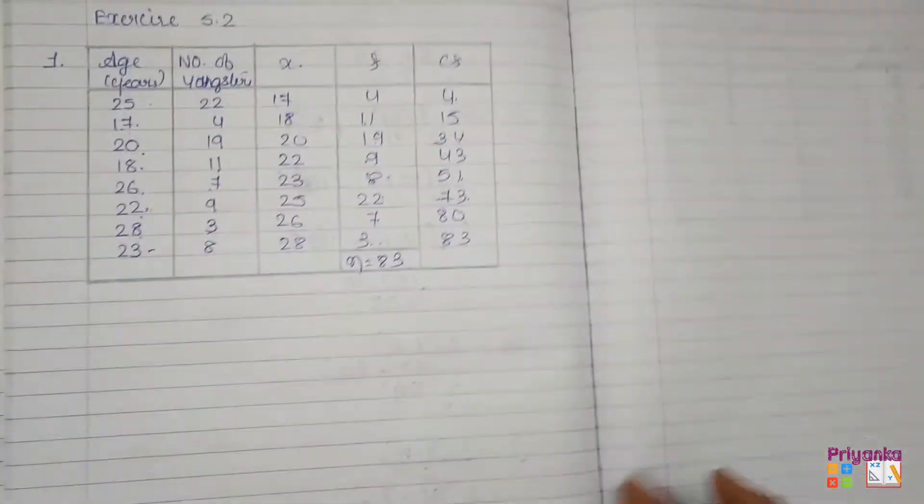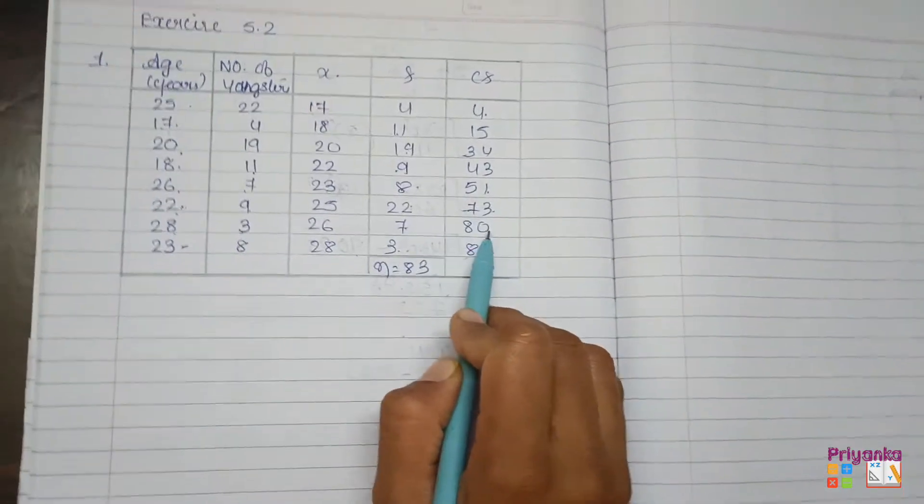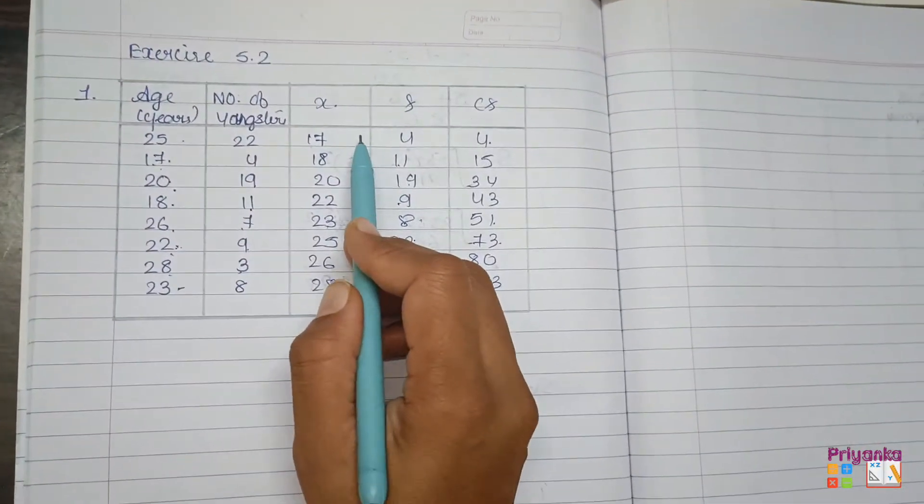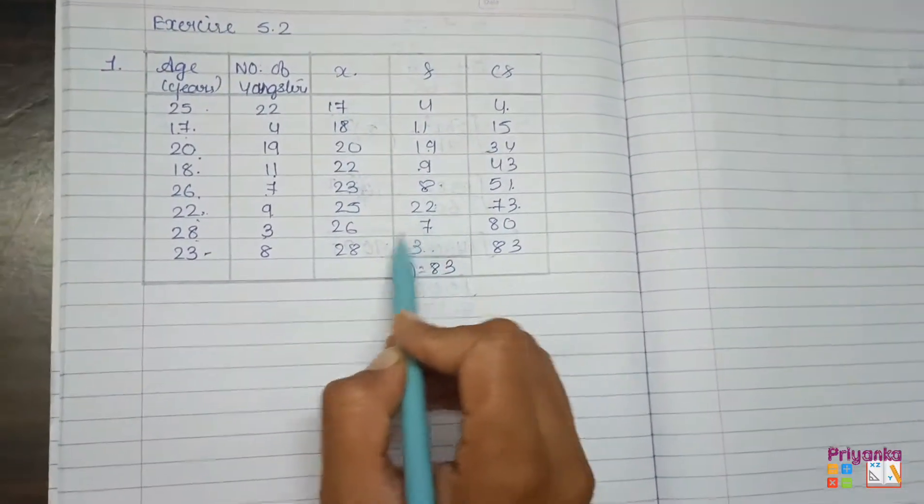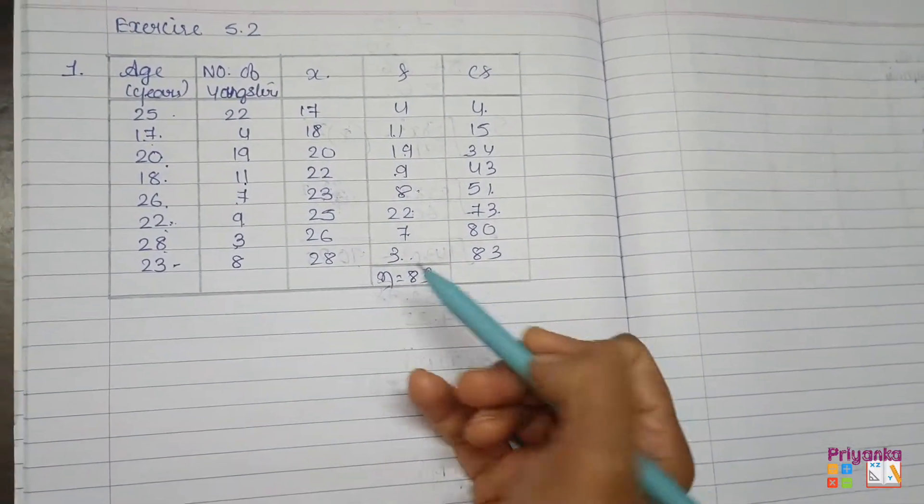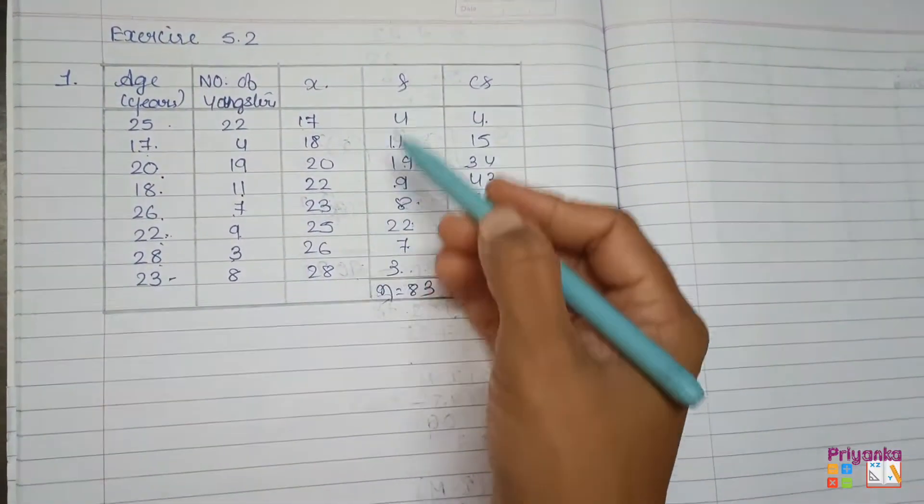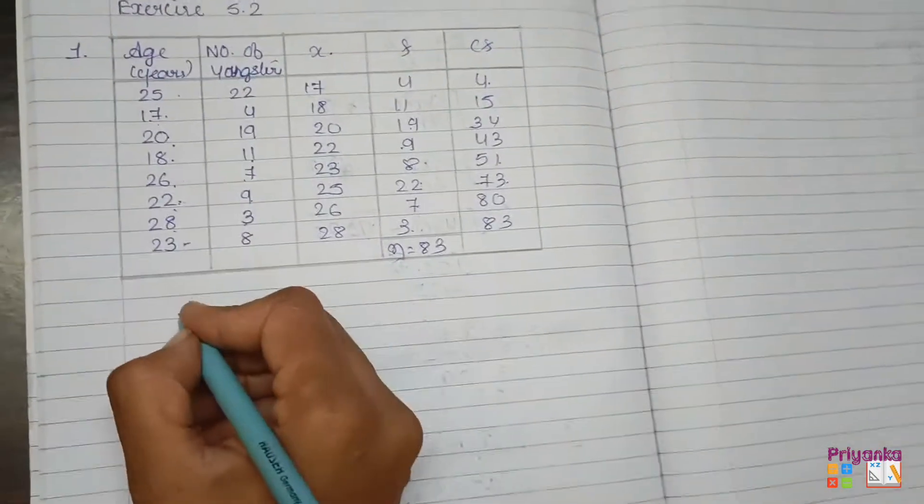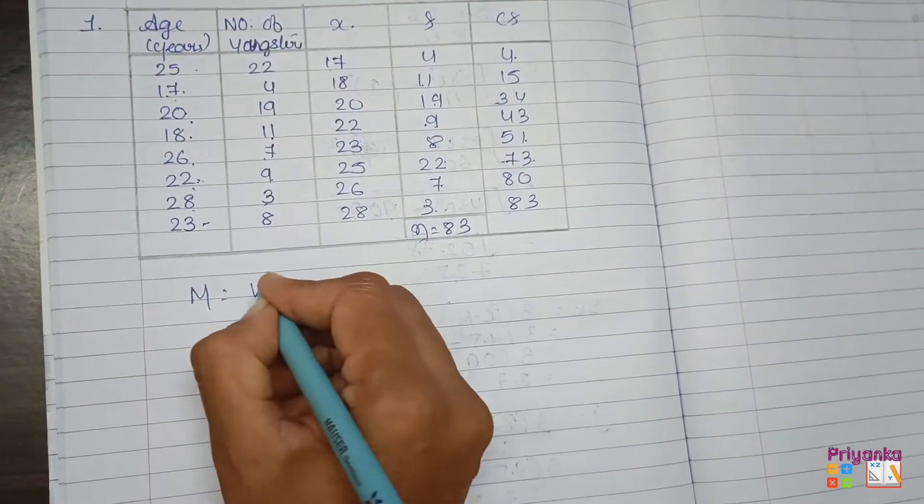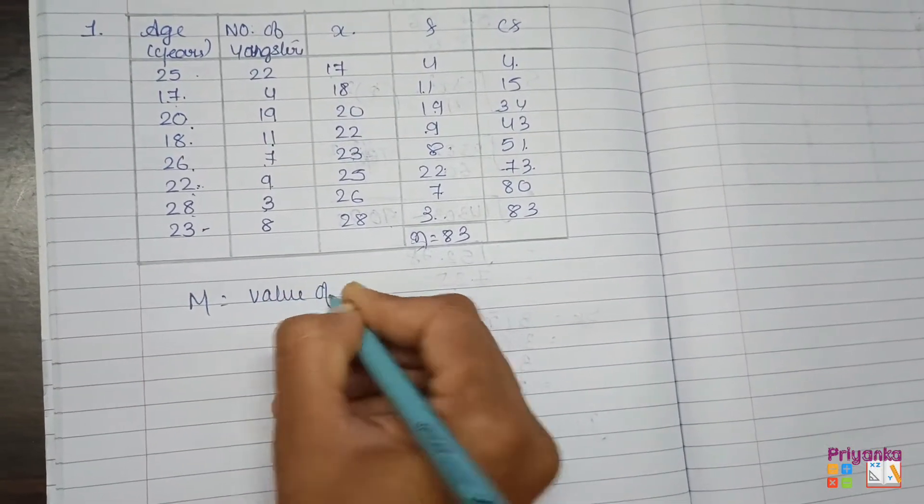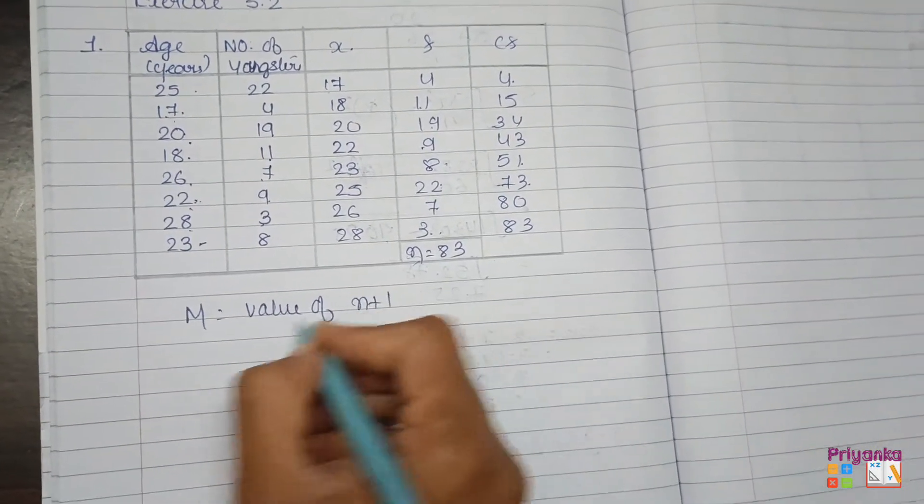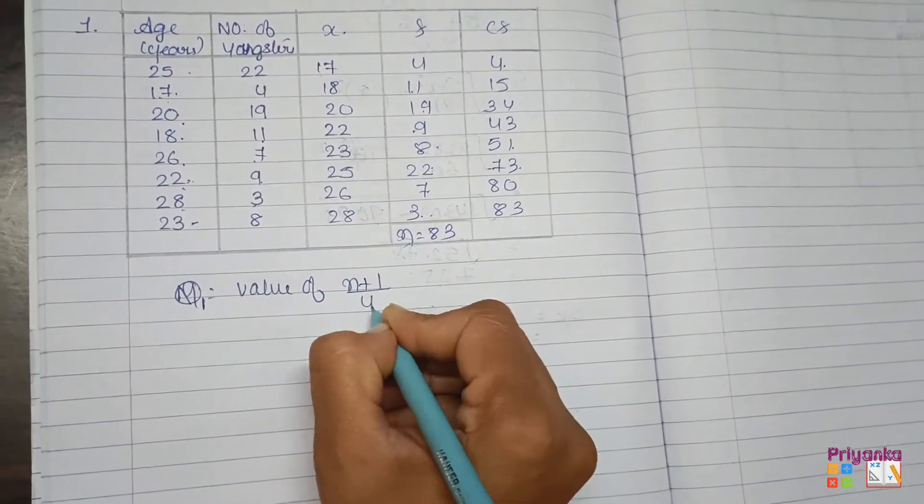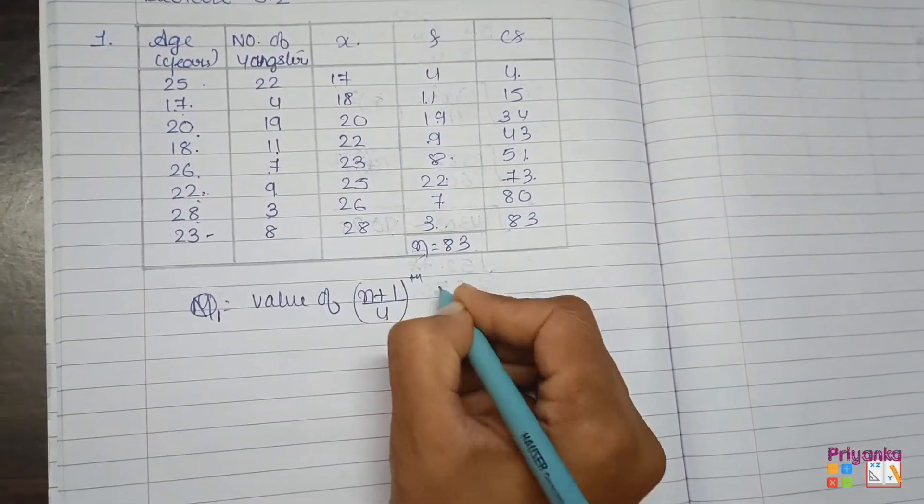This is 83, which will be the total of your frequency. If it gets matched, means upper CF is correct. After finding CF, we will start finding Q1. But before Q1, you see where the information is given. This is discrete data, right? So discrete data, we will not keep the large formula. Here we calculate value of n plus 1 divided by 4, the observation.